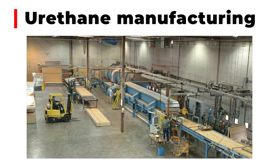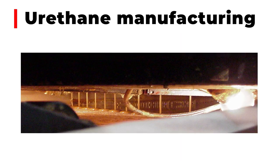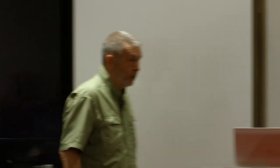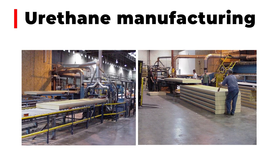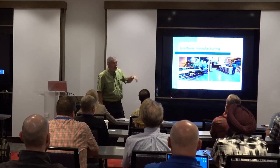The urethane process is slightly different — typically a continuous process where presses act more like tank treads and material moves through. There's a skin on top and bottom, and a manifold pours the polyurethane A and B components, which mix and expand to fill the void and adhere to either skin. The key difference between an EPS core and a urethane core is that in urethane, the foam itself is the adhesive — there's no separate adhesive. Once it comes out of the machine, it's a finished panel ready for fabrication.